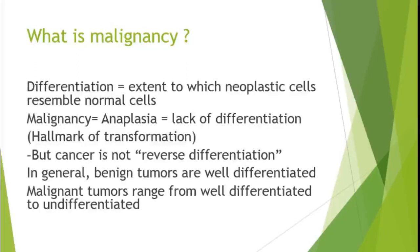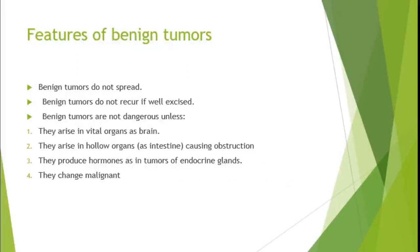Features of benign tumors: benign tumors do not spread, do not recur if well excised, and are not dangerous — unless they arise in a vital organ like the brain, obstruct a hollow organ like the intestine, produce hormones as in tumors of endocrine glands, or undergo frank malignant transformation.